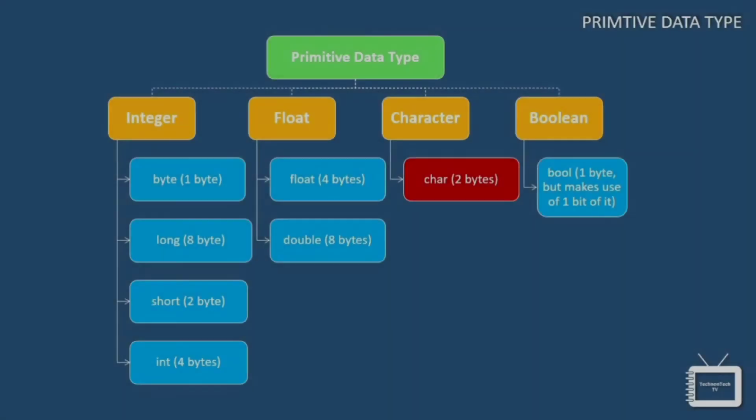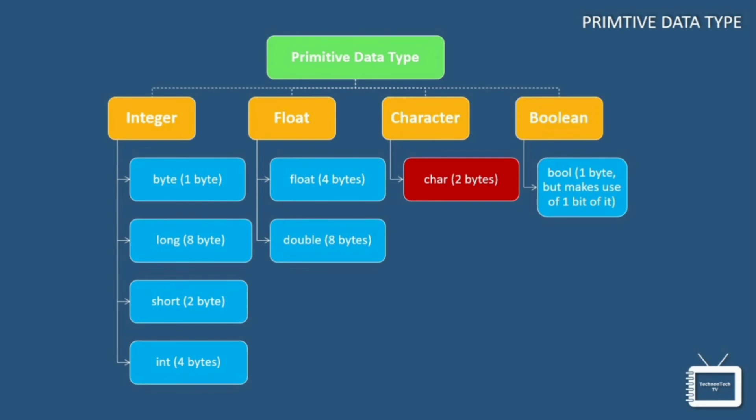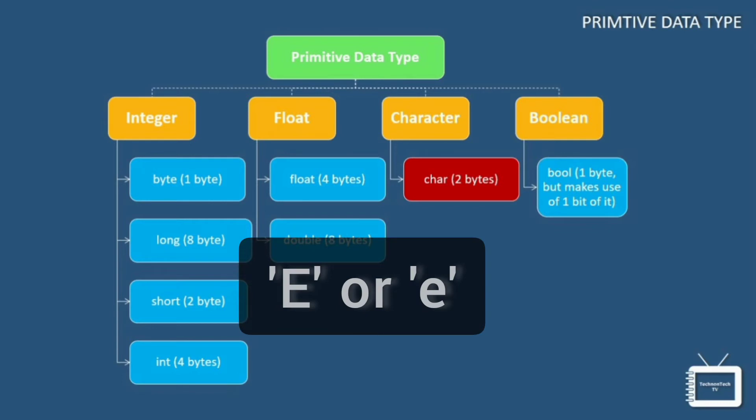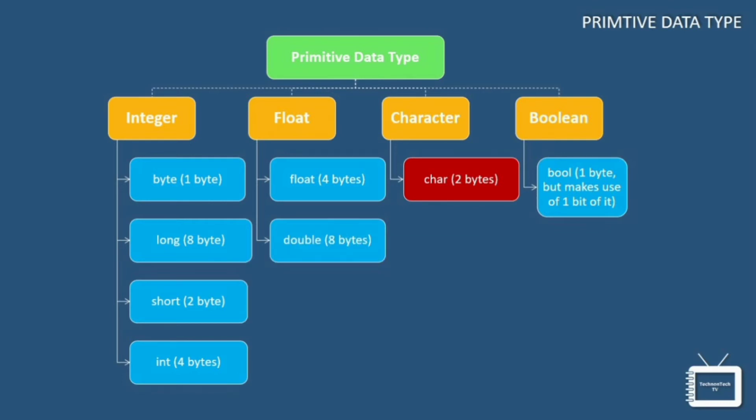Now let's move on to next data type that is char data type. So this data type is used to store a single character. The character must be enclosed within single quotes like E in uppercase or in lowercase. You can also use ASCII values to display certain characters.